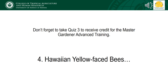This concludes the third advanced pollinator training module. For those of you pursuing the advanced certification for the Hawaii Master Gardeners, don't forget to take quiz three found under lesson materials. You need a score of 70% or greater for credit. Stay tuned for the next lecture, which will be given by Dr. Paul Krushelnicki of UH Manoa on Hawaii's native yellow-faced bees.